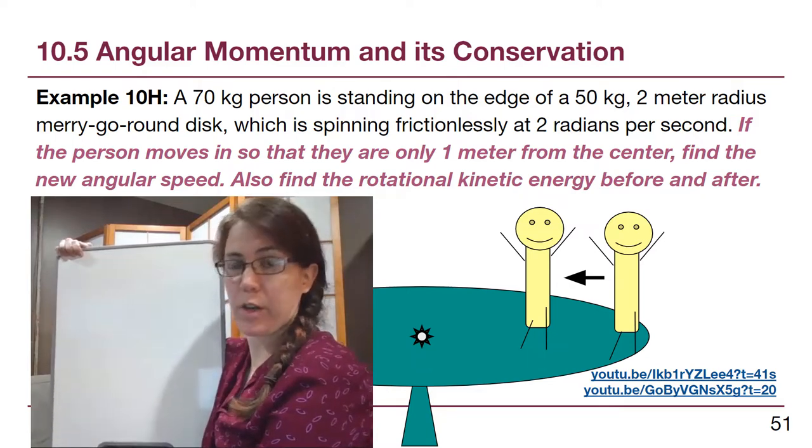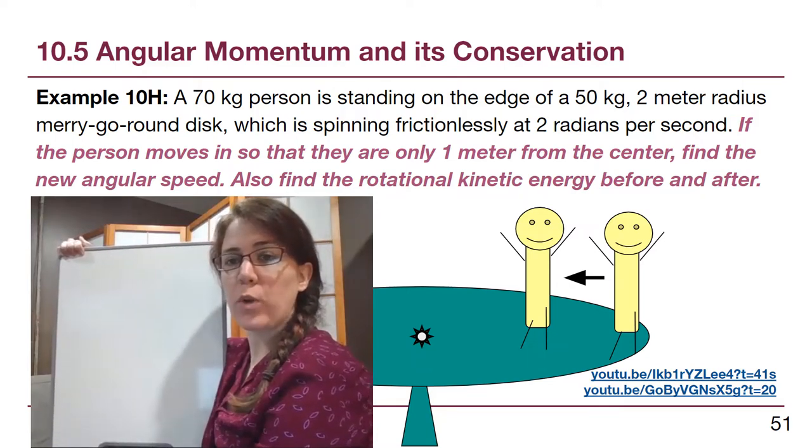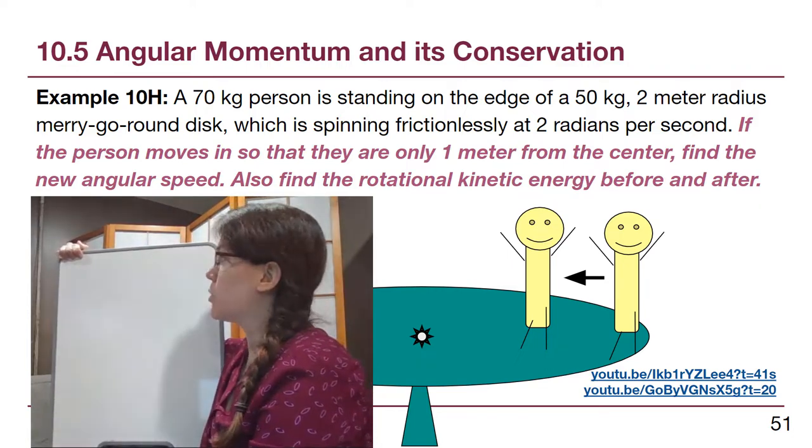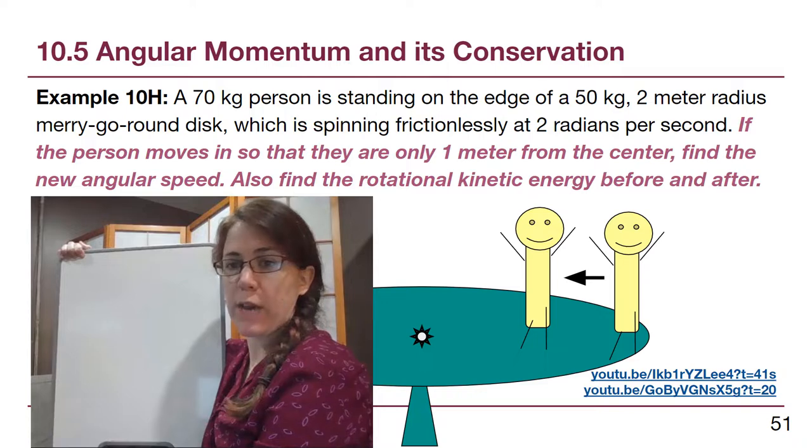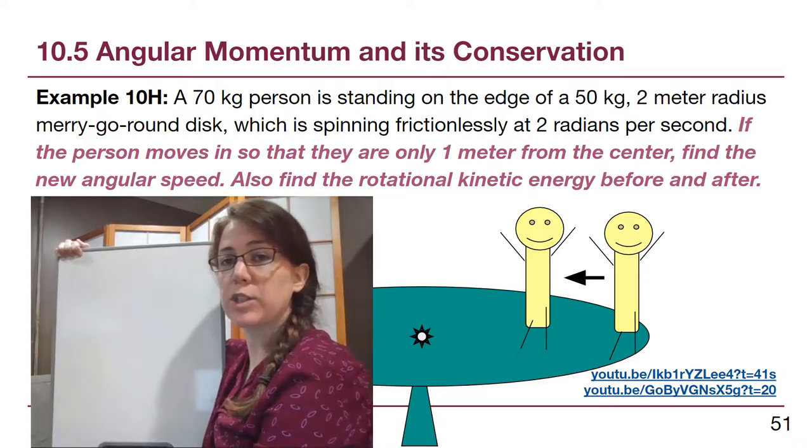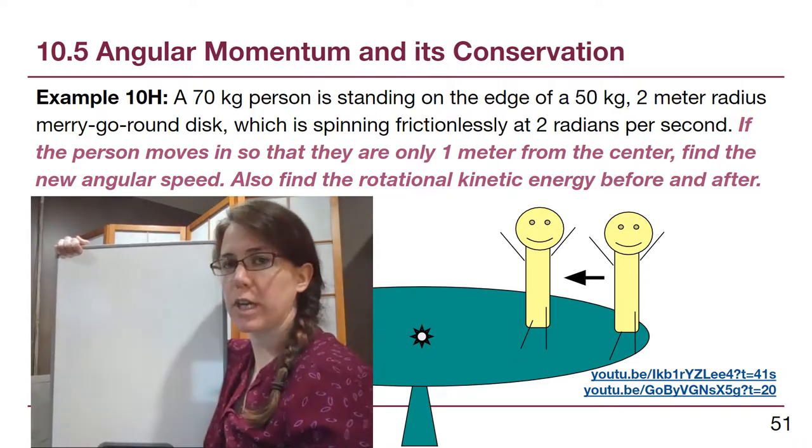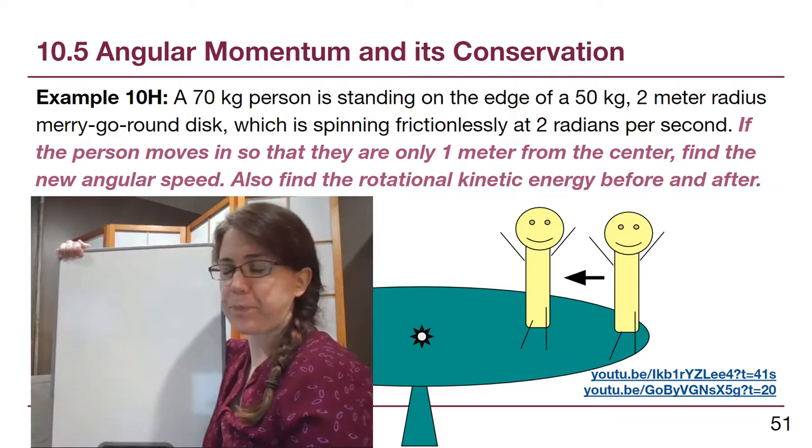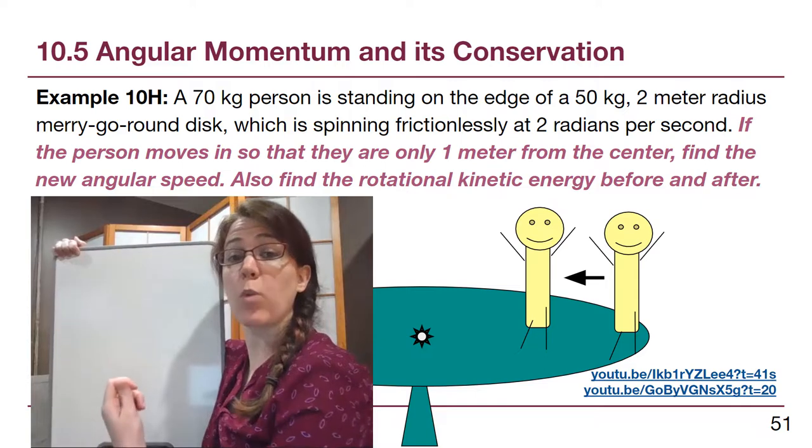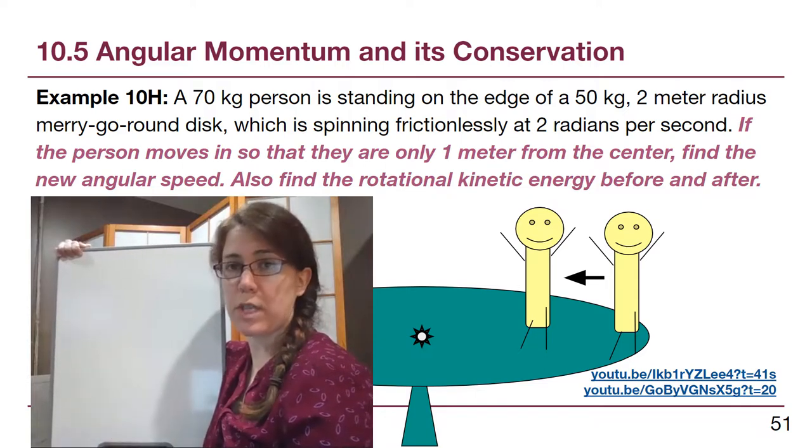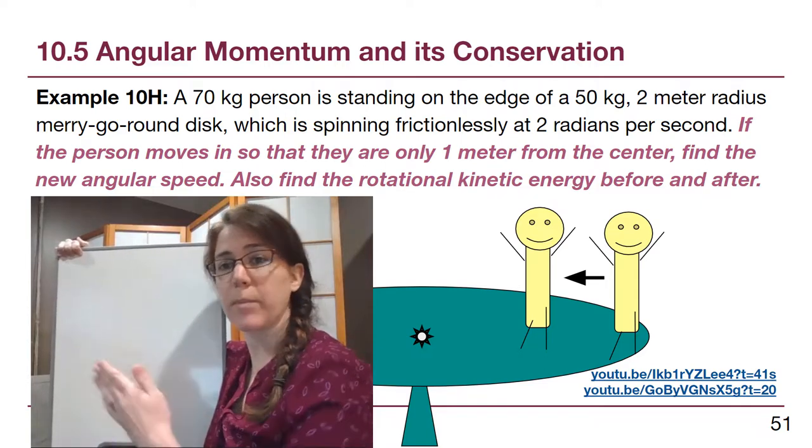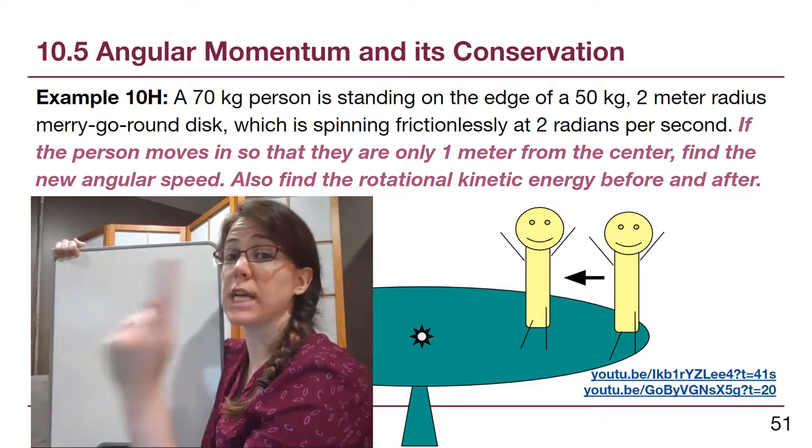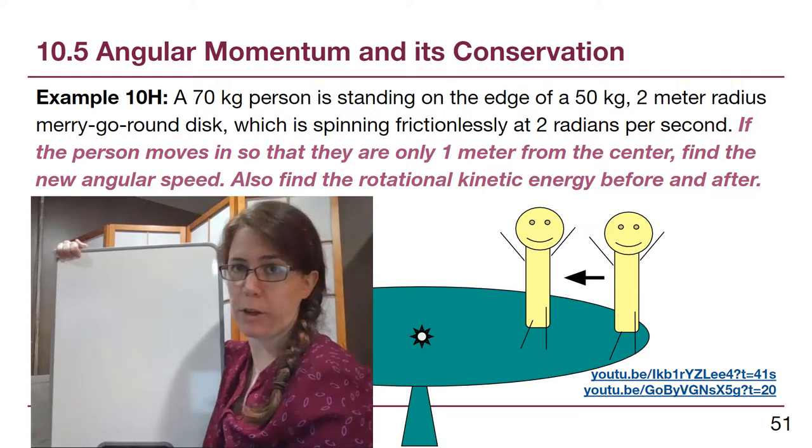Welcome to the last example video for chapter 10, where we look at angular momentum conservation. In this problem, we have a person who is standing on the edge of a merry-go-round disk, one of those flat playground kind of merry-go-rounds which is already spinning. What this person does is they walk directly towards the center, and they make it about halfway. We want to figure out what happens to the angular speed, the rotation of this merry-go-round.